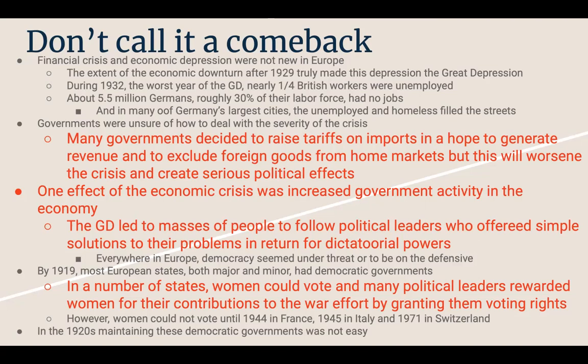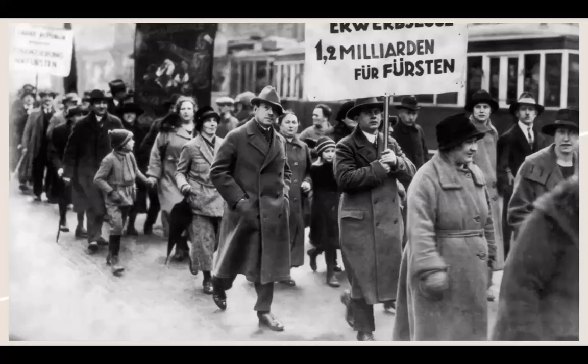The Great Depression led masses of people to follow political leaders who offered simple solutions to their problems in return for dictatorial powers. Everywhere in Europe, democracy seemed under threat. By 1919, many European states — both major and minor — had democratic governments, and in a number of states women could vote. Many political leaders rewarded women for their contributions to the war effort by granting them voting rights, though women could not vote until 1944 in France, 1945 in Italy, and 1971 in Switzerland.